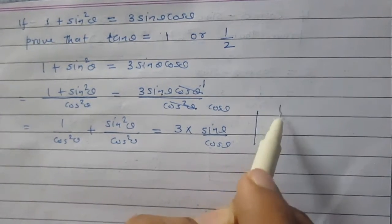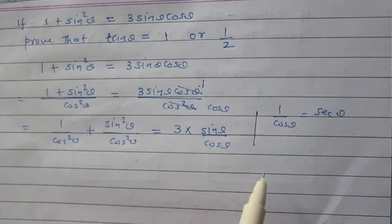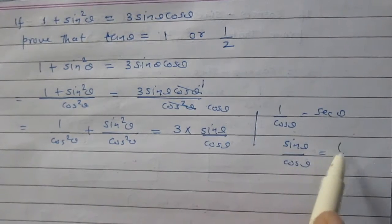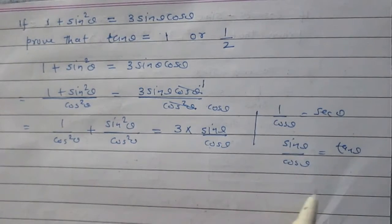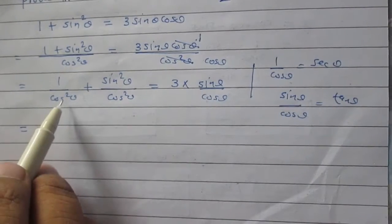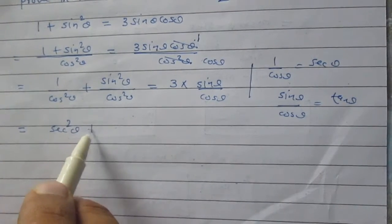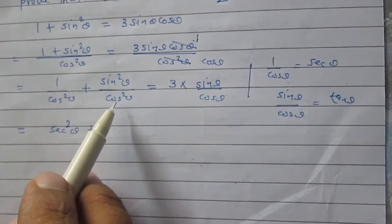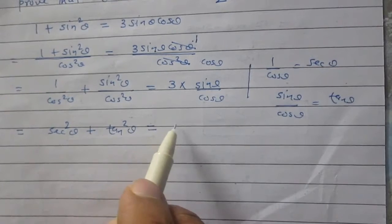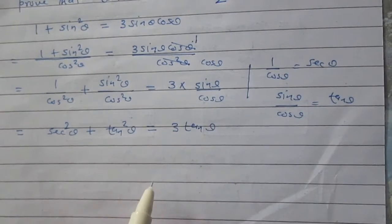Now we know that 1 upon cos theta is sec theta, and similarly sin theta upon cos theta is tan theta. Using these two results, 1 upon cos squared theta is sec squared theta, sin squared theta upon cos squared theta is tan squared theta, and the right hand side is 3 tan theta.